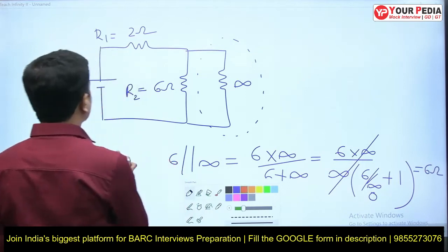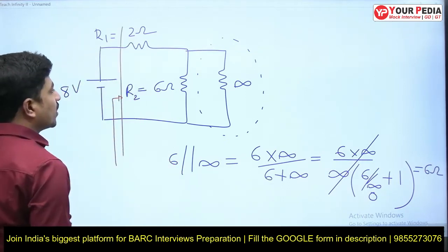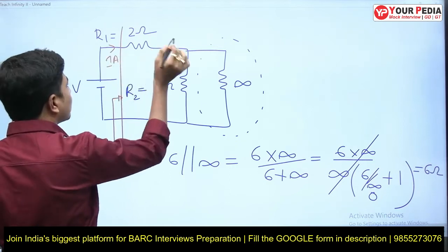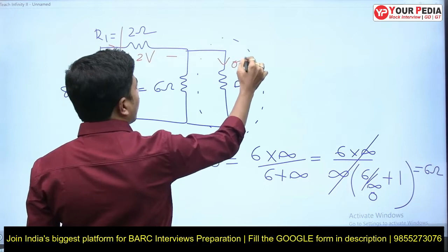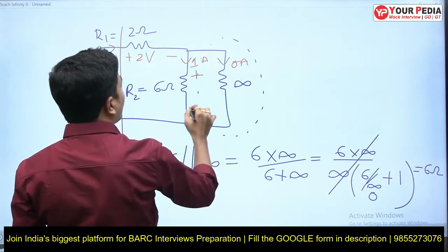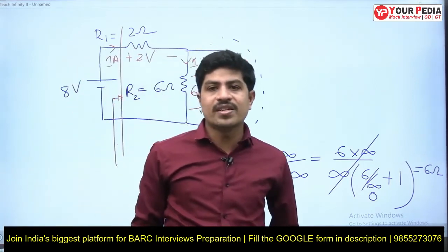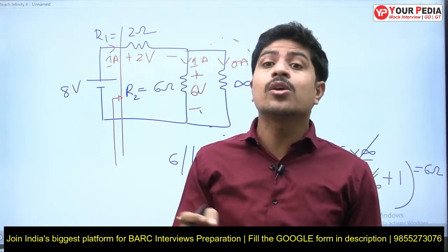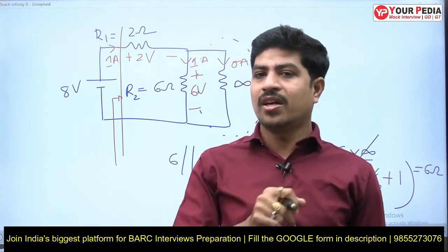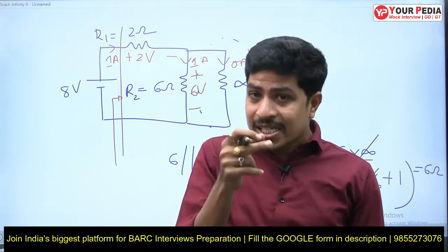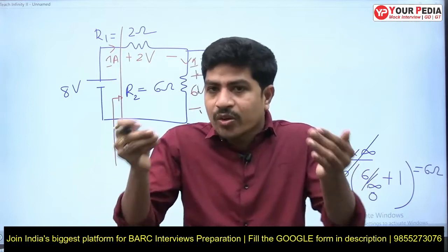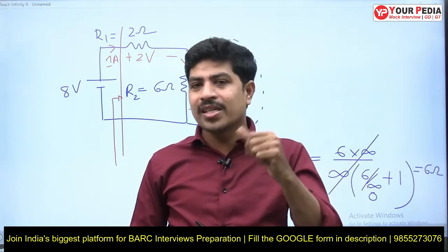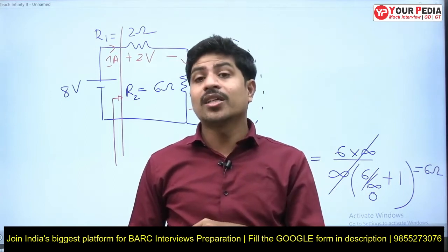With the meter having infinite internal resistance, the impedance seen by the source is 6 in parallel with ∞ = 6, plus 2 = 8 ohms. The current is 1 ampere. The current through the infinite-resistance meter is 0 amperes; 1 ampere flows through R2, giving a voltage of 6 volts — the correct answer. So if you design a voltmeter with internal resistance equal to infinite, it will not cause any loading effect. For an ammeter (connected in series), its series resistance should be equal to zero.